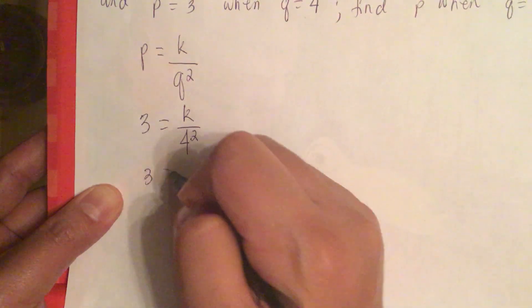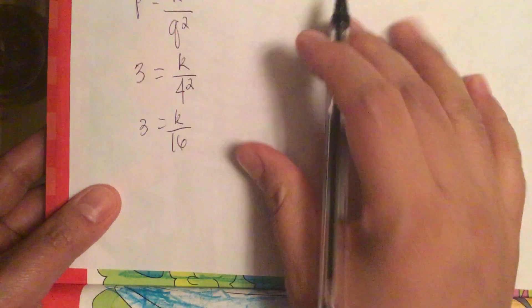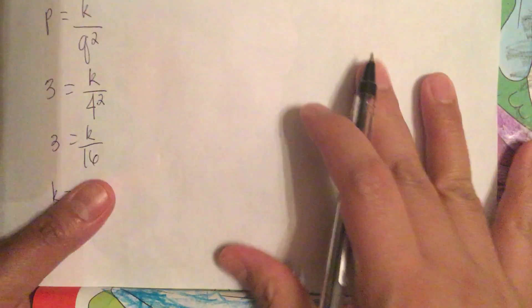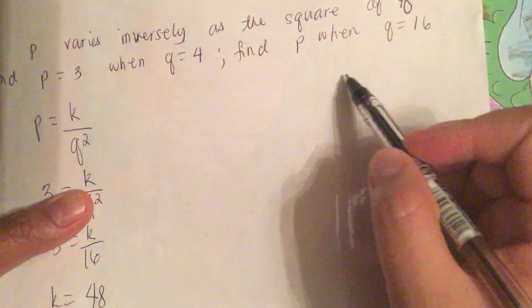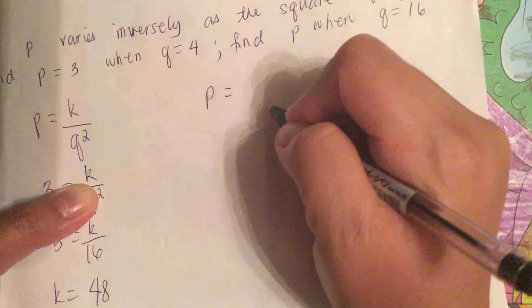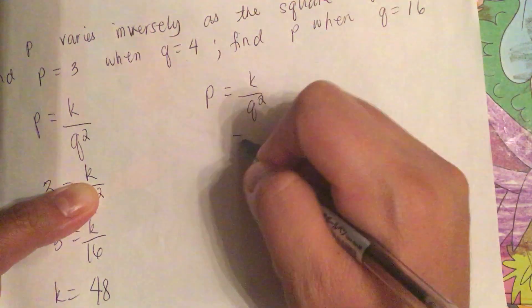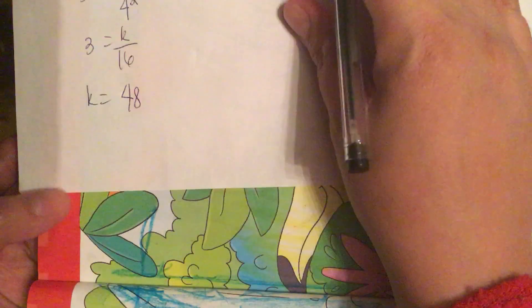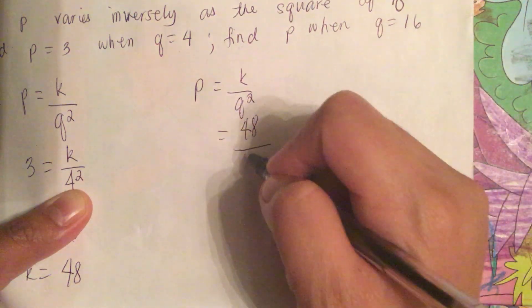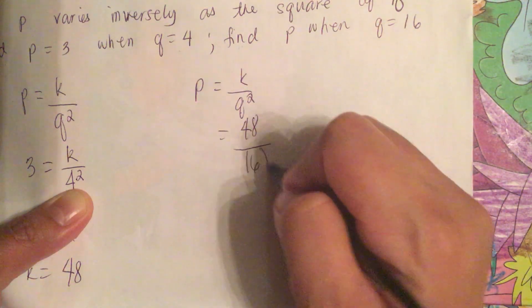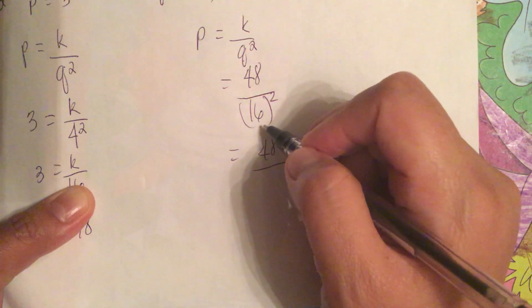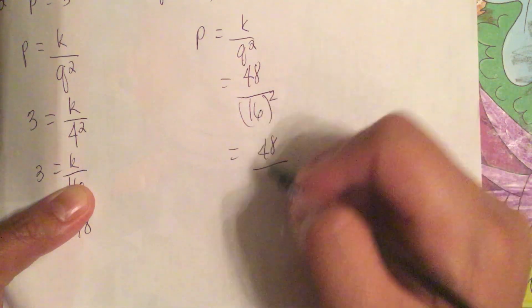So we have 3 is equal to k over q squared. So k is equal to 48. Now p is equal to k over q which is 16 squared. So this is equal to 48 over 16 times 16 is 256.